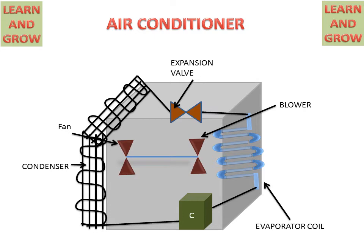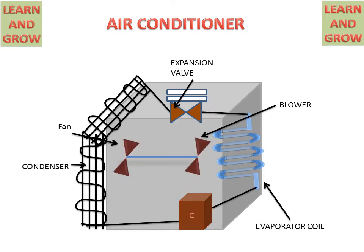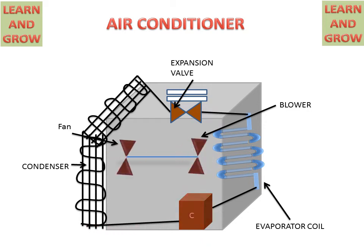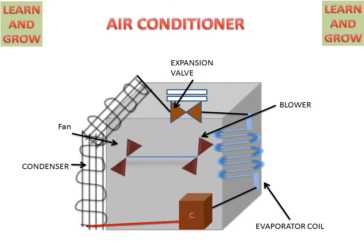Now we will see the working of the air conditioner. When the AC power supply is turned on, the fans and compressor start working. The compressor converts refrigerant fluid into high pressure vapour. This high pressure vapour goes to the condenser, where it is converted into liquid form.